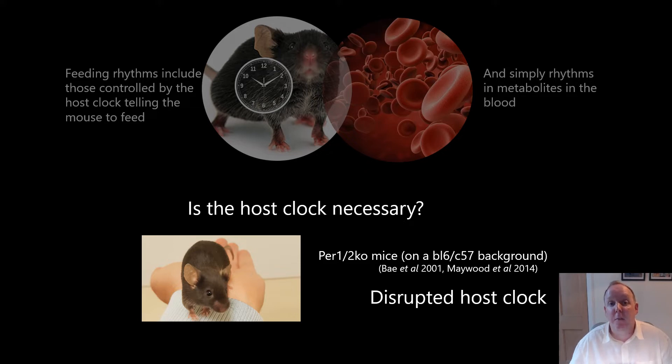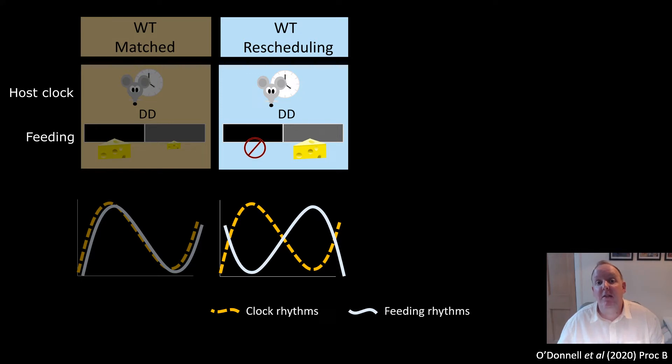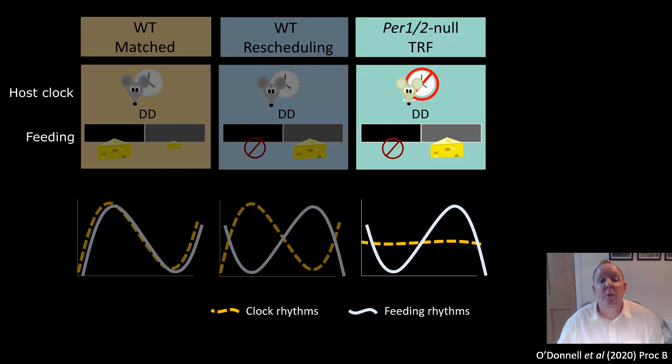And to do this, we used a combination of arrhythmic PER-1-2 knockout mice and a time-restricted feeding regime. We designed an experiment where we gave parasites to four groups of mice, all housed in DD. We have our wild type controls that were given 24 hours access to food, but due to an intact clock, they will naturally keep the majority of their feeding and activity to one big chunk of time.